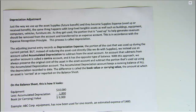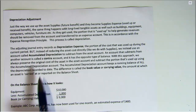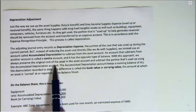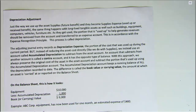When we use this approach, we always preserve the original cost of the asset in the asset account and subtract the portion that's been used up using the accumulated depreciation account, which keeps a running balance of all the depreciation recorded to that date.